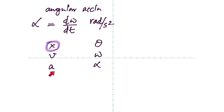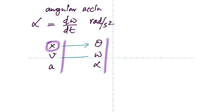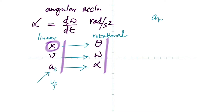Remember that this acceleration is also called tangential acceleration. You remember the kinematics formulas? You're going to have the same formulas here. On the left-hand side you have linear; on the right side you have rotation. That could also be called tangential acceleration — A sub t.